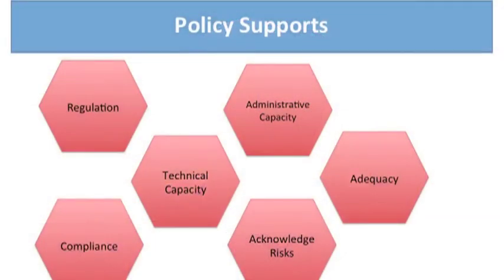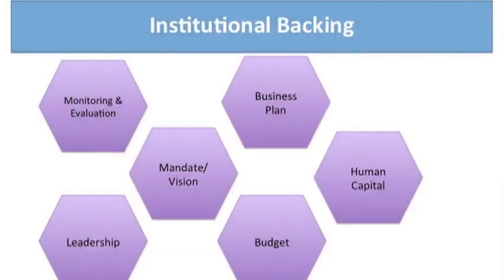As we think about policy supports for change, we want to consider regulations, administrative capacity, the technical capacity for change, the adequacy of the changes and the policies, and are we adequately acknowledging risk, as policy changes have inherent risk with them. Lastly, we can look at the institutional backing: Are there systems for monitoring and evaluating change? Do we have business plans? Is there a leadership model in place? And is there budget and human capital to support the change as we go forward?